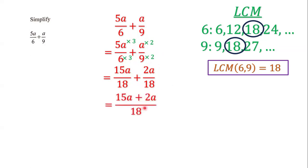We keep the denominator of 18 — we do not add the denominators, just the numerators. 15a plus 2a is 17a, so our answer is 17a over 18.